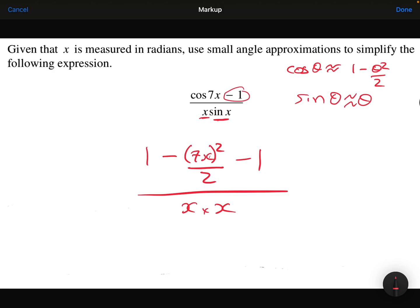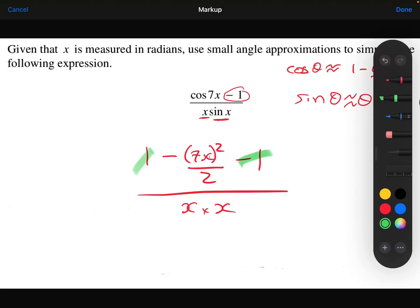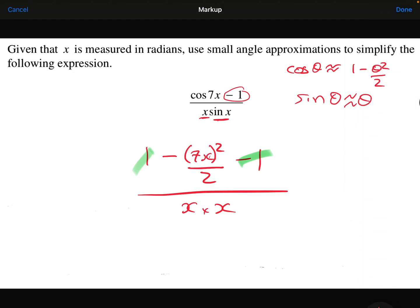So on the numerator, I've got the 1 minus the 1. So that cancels out. And then I'm just left with the minus 7x all squared. So 7x times 7x is 49x squared over the 2. On the denominator, I've got the x times x is x squared.